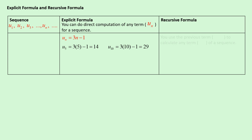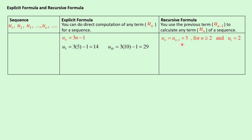With a recursive formula you need the previous term to do the calculation. This formula does not have the term n; instead it contains the previous term u(n-1). You must also specify the condition for the value of n and the value of the first term. If I ask you to find the third term, you cannot do direct calculation like with the explicit formula.